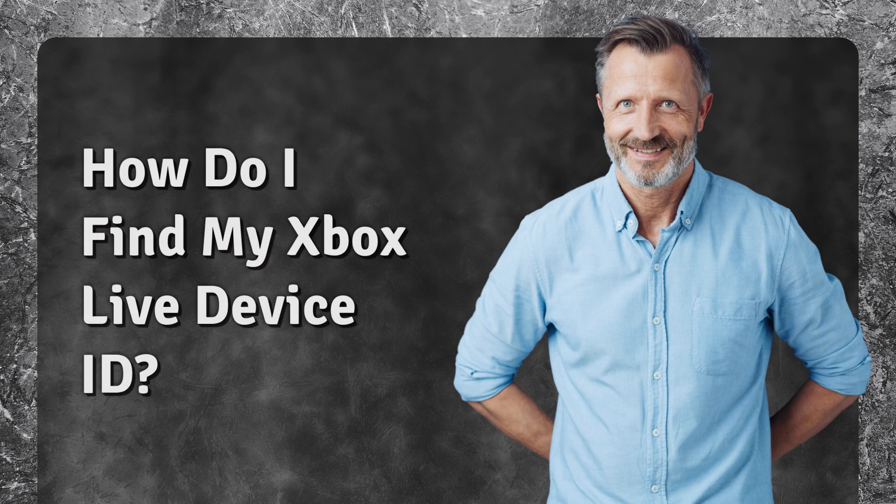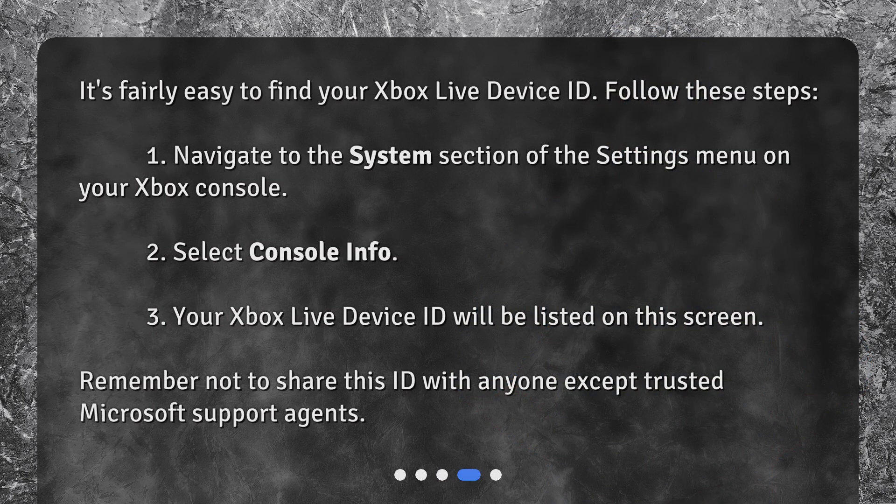How do I find my Xbox Live Device ID? It's fairly easy to find. Follow these steps: First, navigate to the System section of the Settings menu on your Xbox console. Second, select Console Info. Third, your Xbox Live Device ID will be listed on this screen. Remember not to share this ID with anyone except trusted Microsoft support agents.